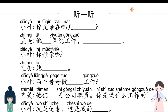Second time: 你父亲在哪儿工作？他在医院工作，他是医生. 你母亲呢？他不工作. 两个哥哥做什么工作？他们都是公司职员. 你是做什么工作的？我是记者，这是我的名片。